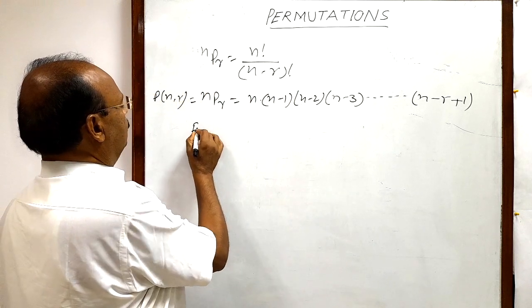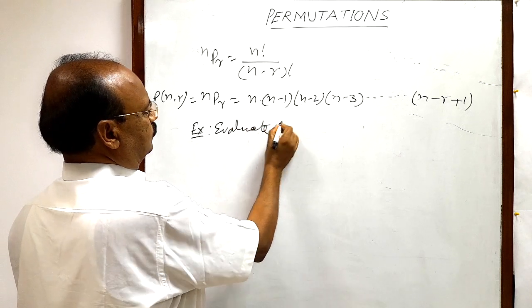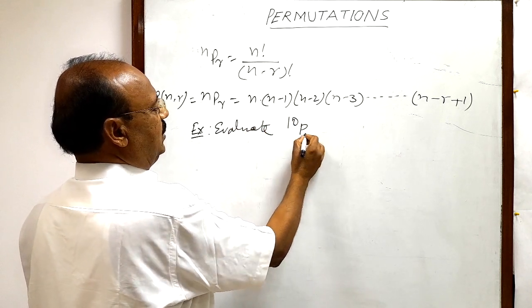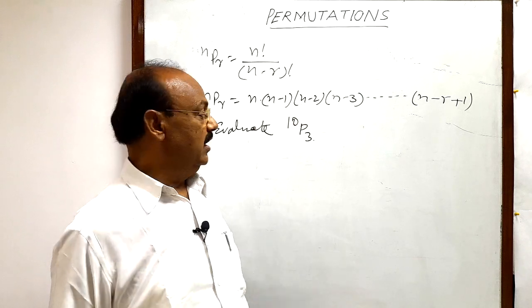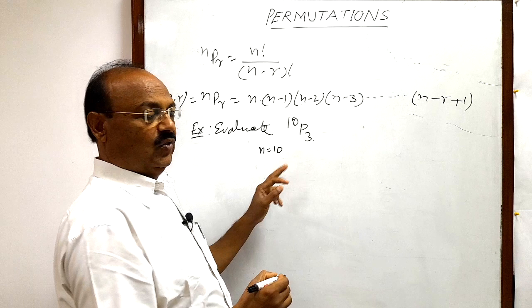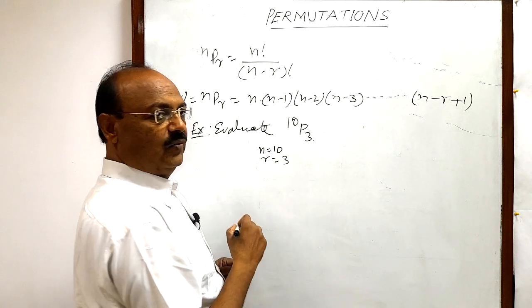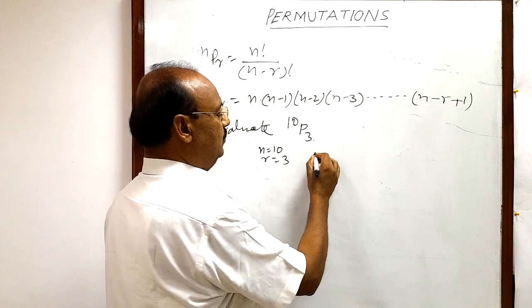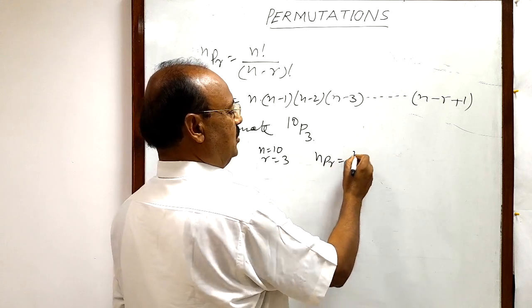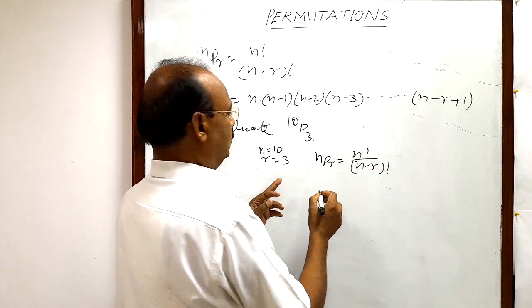Suppose we have to evaluate 10P3. Here N is equal to how much? N is equal to 10 and R is equal to how much? R is equal to 3. And we will use the formula NPR is equal to N factorial by N minus R factorial. So therefore,